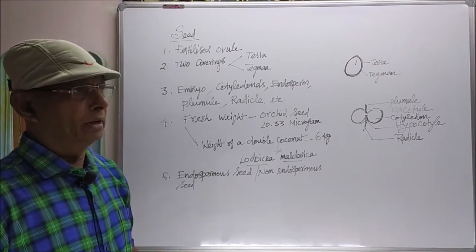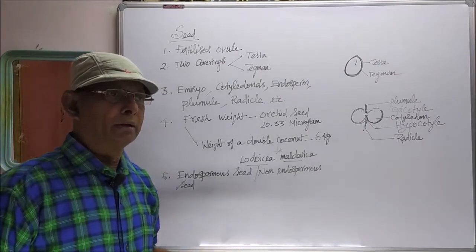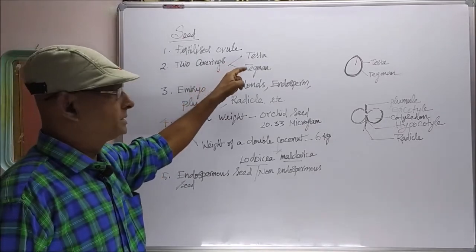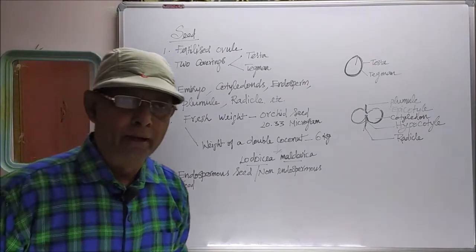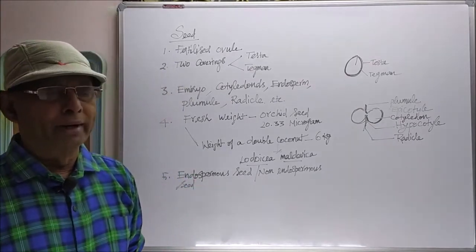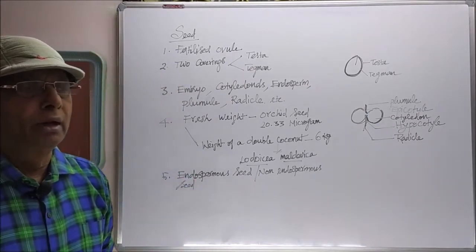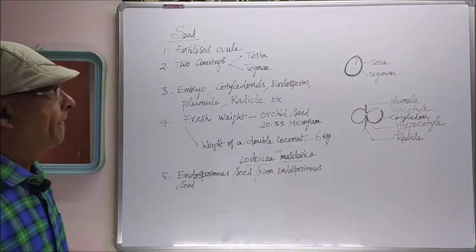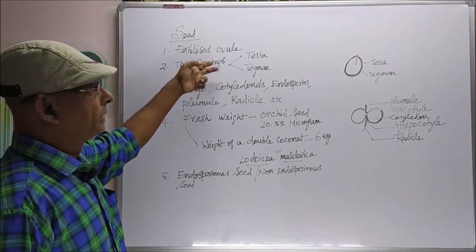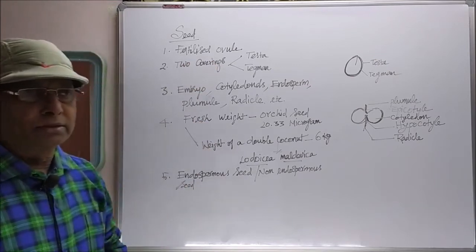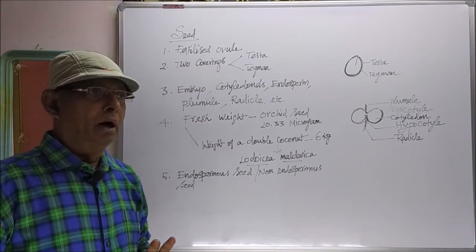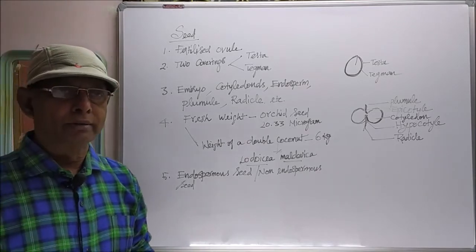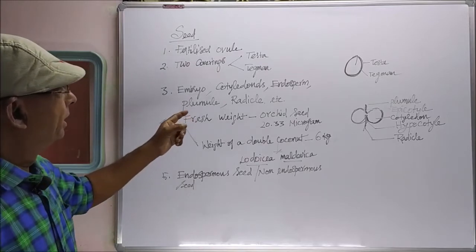Testa is brown in color, in some cases yellow in color. The second covering is called tegmen. Tegmen is thin, membranous, very soft and delicate, and is pale yellow in color. Each seed has two coverings: the outermost first covering is the testa, and the second covering is the tegmen.